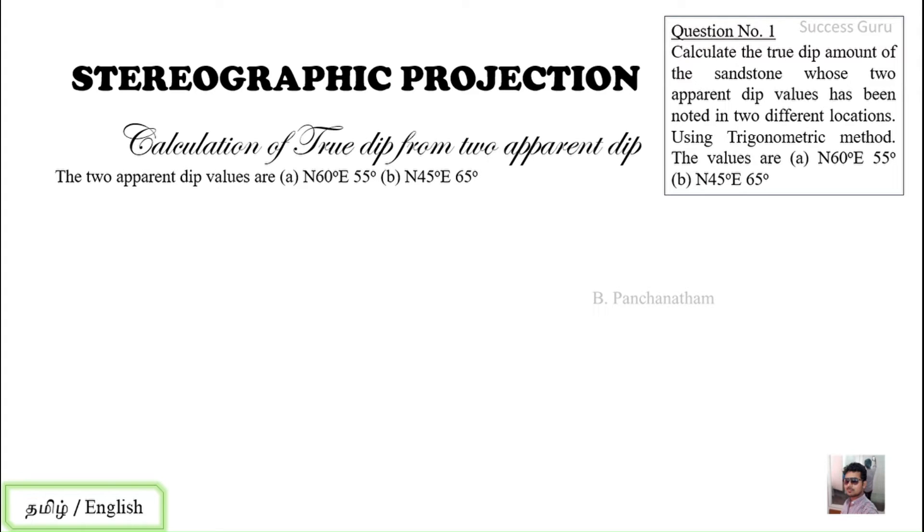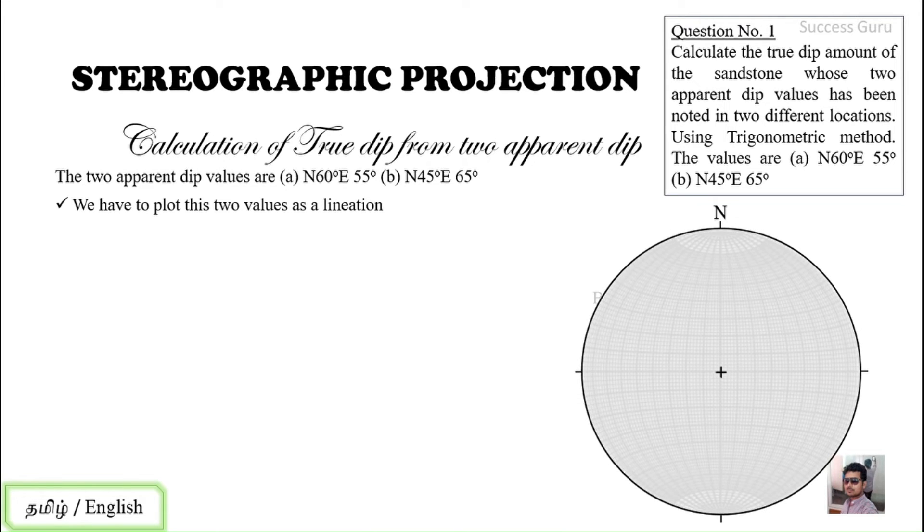As usual, we have to plot this with the help of a lineation in a projection. Let us consider this as our projection plane and our first apparent dip will be N60° E.